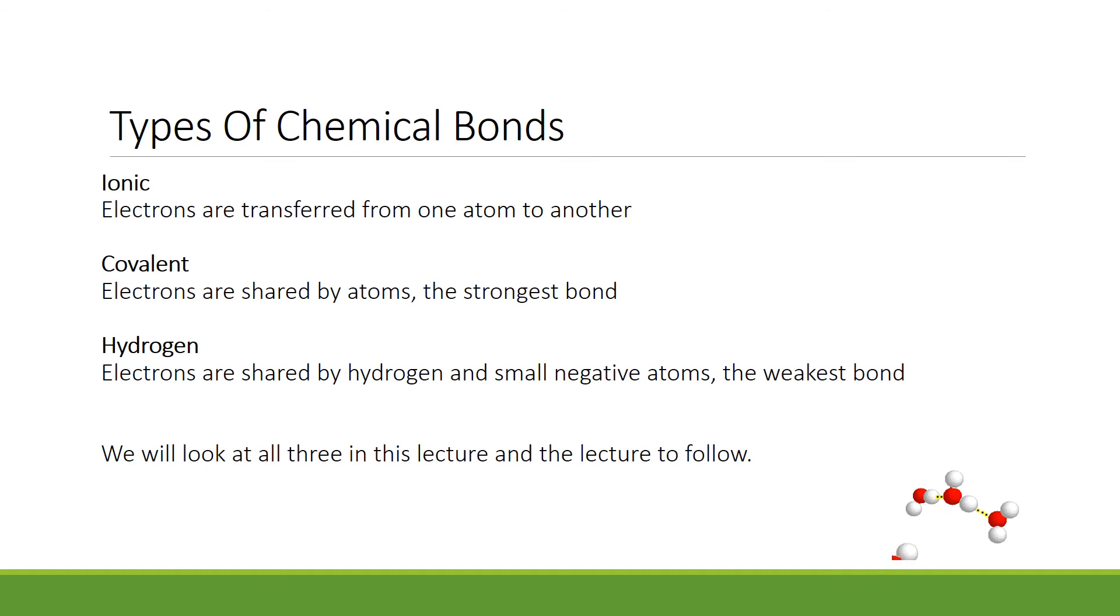You should know that there are three types of chemical bonds. An ionic bond, in which electrons are transferred from one atom to another atom. Covalent bonds, in which electrons are shared by atoms, and it's the strongest of the bonds. And hydrogen bonds, in which electrons are shared by hydrogen and small electronegative atoms. And the hydrogen bond is the weakest bond.